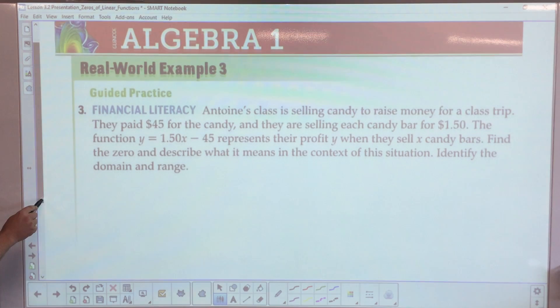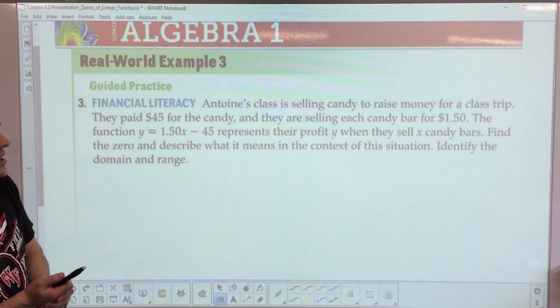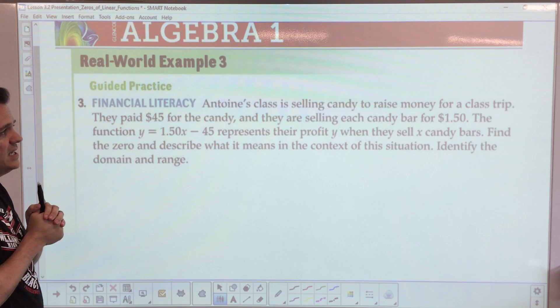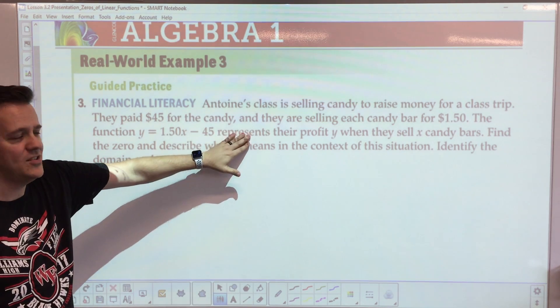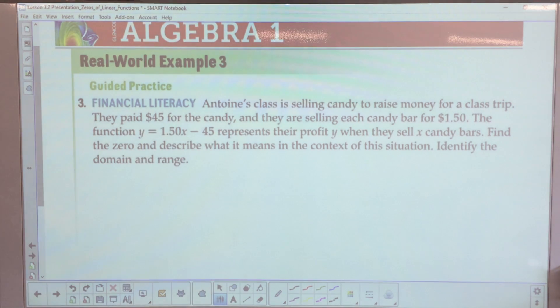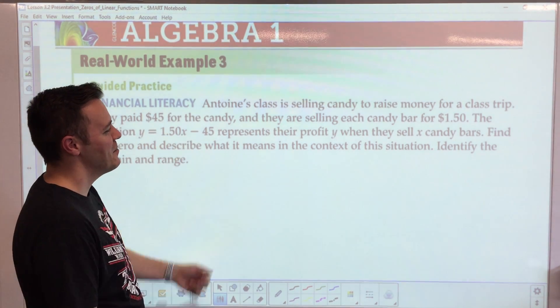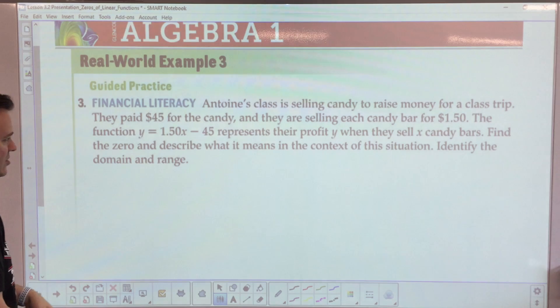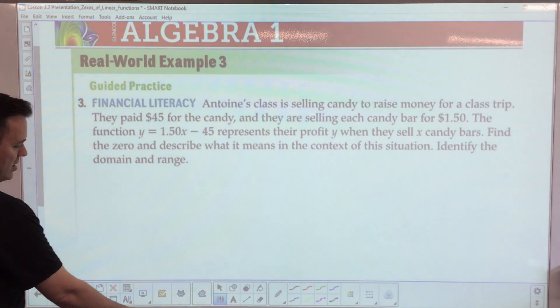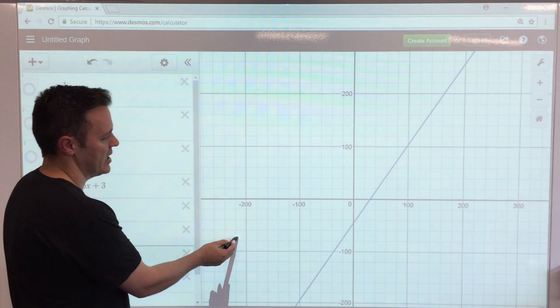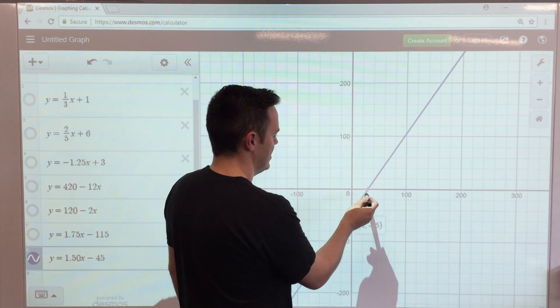Last but certainly not least: Antonio's class is selling candy to raise money for the class trip. They paid $45 for the candy and are selling them for $1.50 each. The function is y equals 1.5x minus 45, and that's how they're selling the candy bars. Last graph I go on Desmos and I find the x-intercepts.